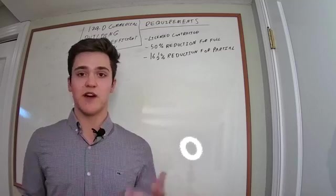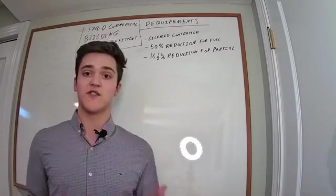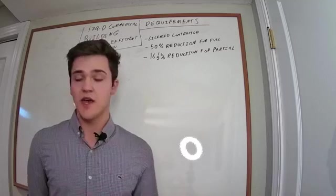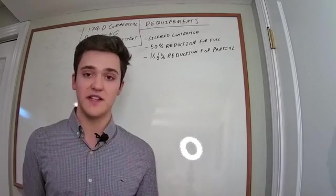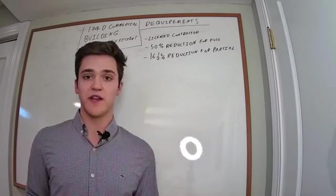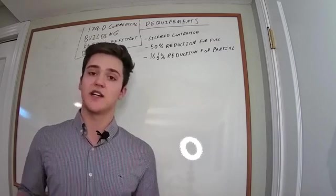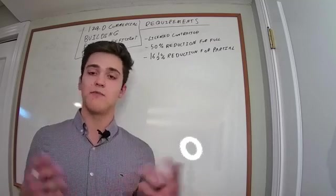So the first thing we're going to be talking about is where does it come from? The 179D deduction is from the Department of Renewable Energy and it was written into law many years ago in order to incentivize new, more efficient systems in commercial buildings to cut down on waste, to cut down on excess electricity we don't need, to cut down on carbon emissions and many other benefits.